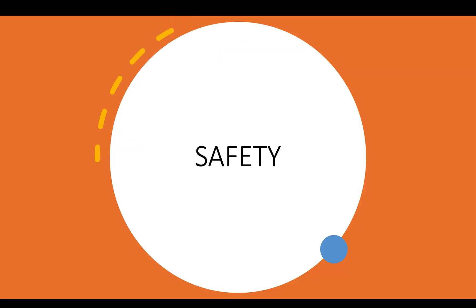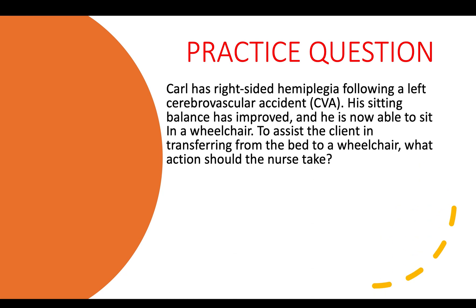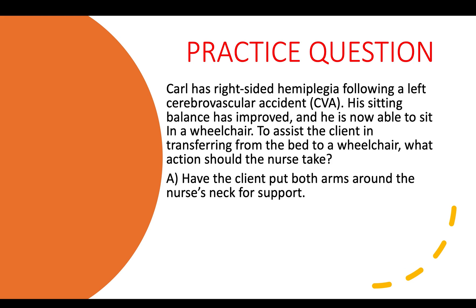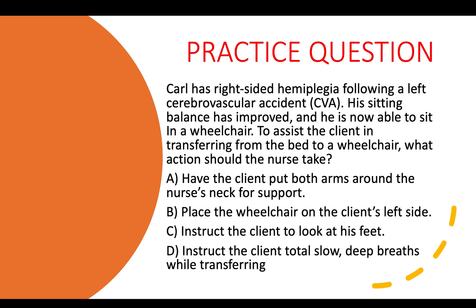The next strategy is recognizing that safety is important. We touched on safety in the ABCs S&D. Let's practice: Carl has right-sided hemiplegia following a left CVA. His sitting balance has improved and he is now able to sit in a wheelchair. To assist the client transferring from bed to a wheelchair, what action should the nurse take? A) Have the client put both arms around the nurse's neck, B) Place the wheelchair on the client's left side, C) Instruct the client to look at his feet, or D) Instruct the client to take slow deep breaths while transferring.